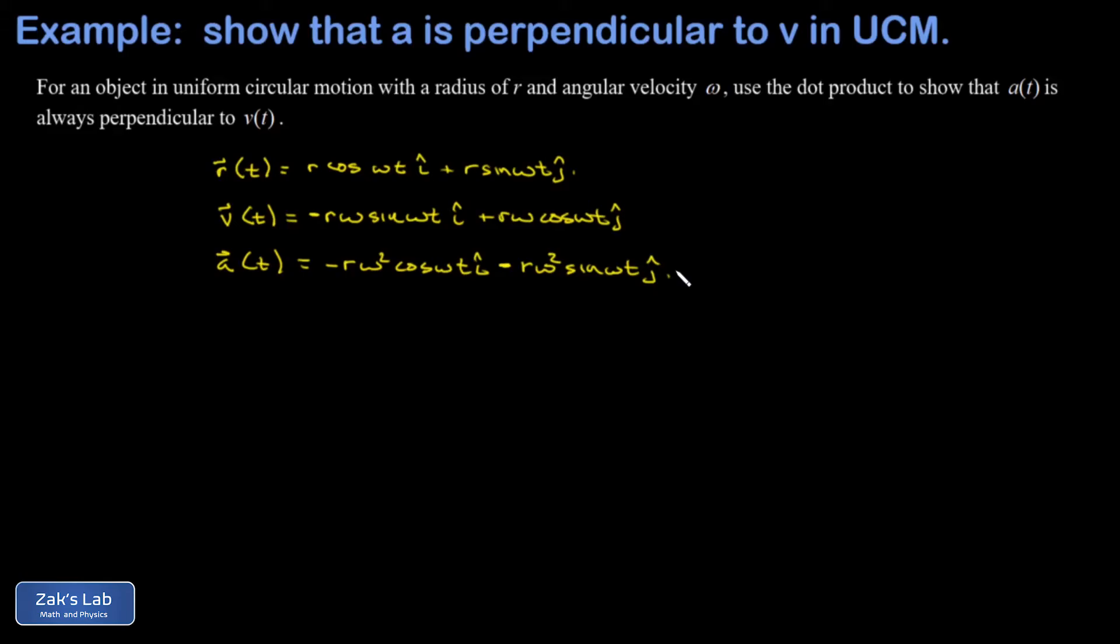And then the particular question I'm asked in this problem is to show that the acceleration is always perpendicular to the velocity vector. So we're going to take a dot product between the velocity and acceleration vectors. That means we pairwise multiply the coefficients of these unit vectors.